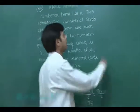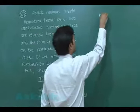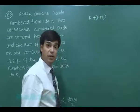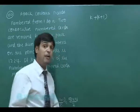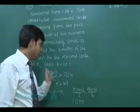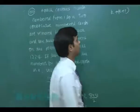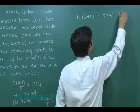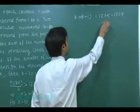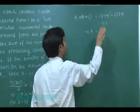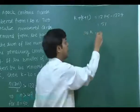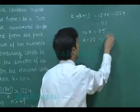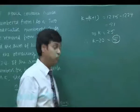The two removed cards are numbered k and k+1, so their sum is 2k+1. This sum equals 1275 minus 1224 = 51. So 2k+1 = 51, giving k = 25. Therefore k minus 20 = 5. The answer for this question is 5.